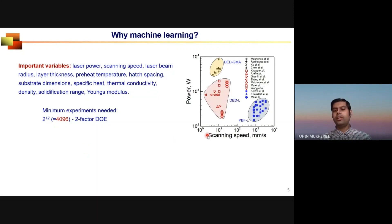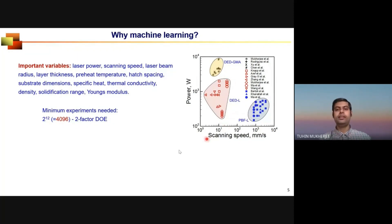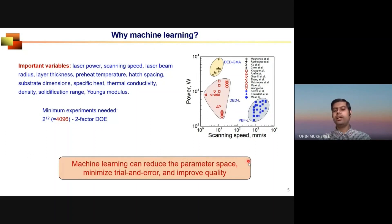In addition, if we take two prominent variables — power and speed — they vary a lot depending on which additive manufacturing process is used. Note the logarithmic scale: the scanning speed in powder bed fusion is two orders of magnitude higher than in DED. We need to explore a wide range of process parameters, which is impossible by experimental trial and error. Machine learning can reduce the parameter space, minimize trial and error, and improve part quality.